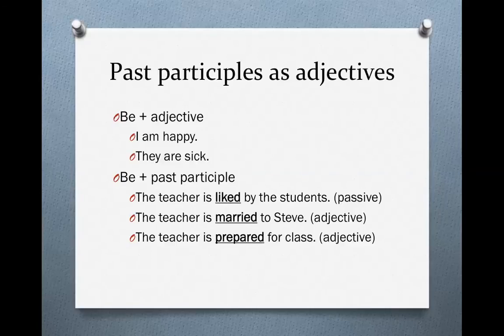Let's look at some examples. In the first sentence: "The teacher is liked by the students." We have a form of the verb be and the past participle of the verb like — liked. This is a passive sentence with a passive meaning. The teacher is the subject, but the teacher isn't doing the action. We could easily make this into an active sentence: "The students like the teacher."